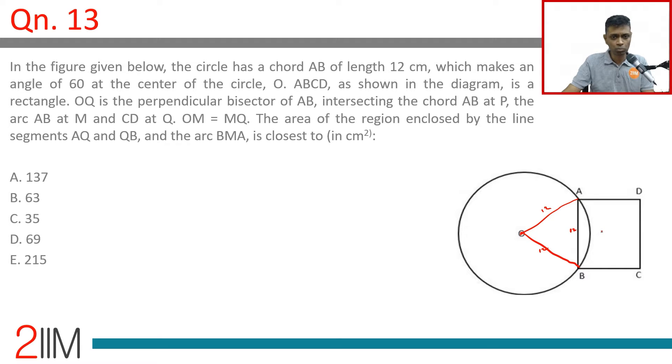OQ is a perpendicular bisector of AB, intersecting chord AB at P, arc AB at M, and CD at Q. This is 6, this is 6.